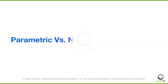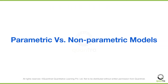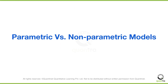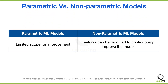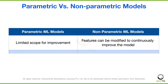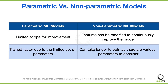To summarize, let's do a quick comparison between parametric and non-parametric models. When it comes to parametric models, the scope for improvement is limited as they have a defined set of parameters. Whereas non-parametric models can be improved continuously by modifying the features, though this can cause longer training times as there are various parameters to consider. Parametric models are trained faster due to their limited set of parameters.